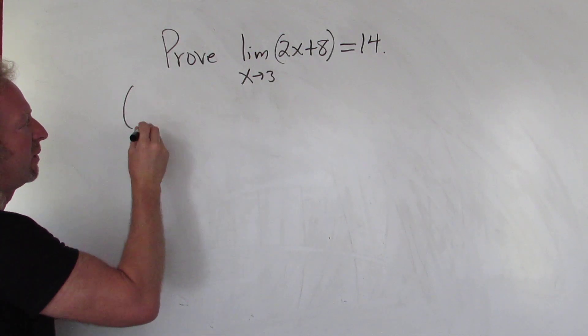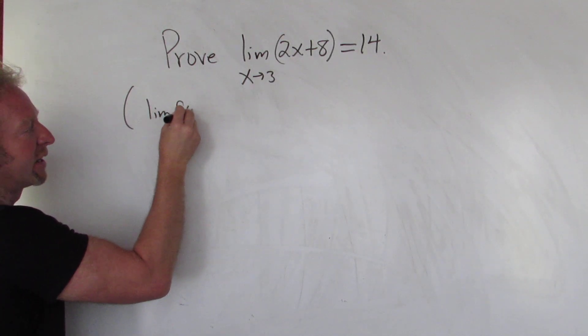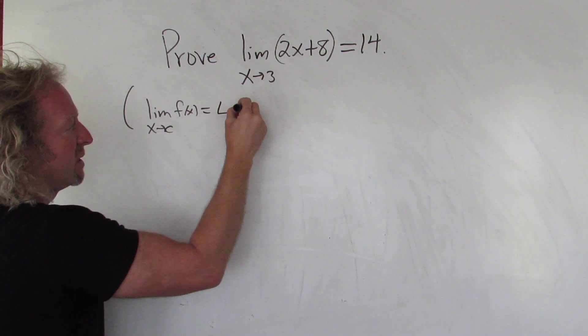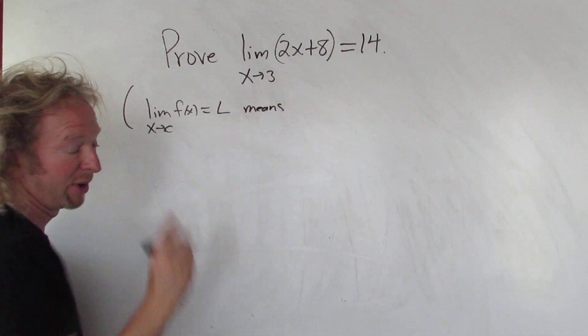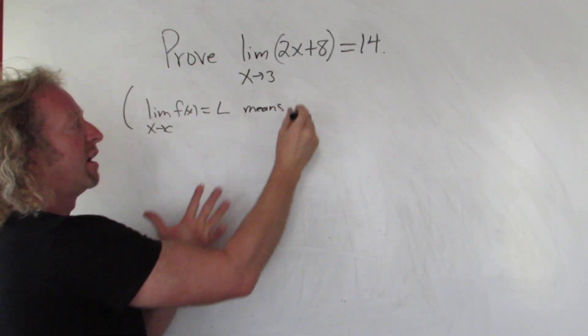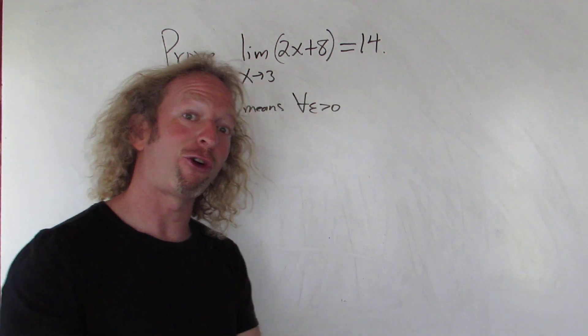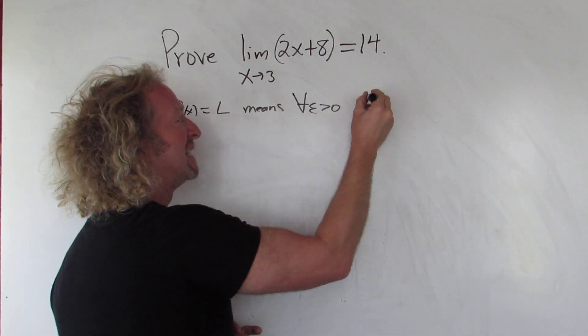So basically we say that the limit of f as x approaches c is equal to L. This means L here is a real number by the way, it has to be a real number. This means that for all little epsilon greater than zero, so that upside down A means for all, it's really cool, there exists...